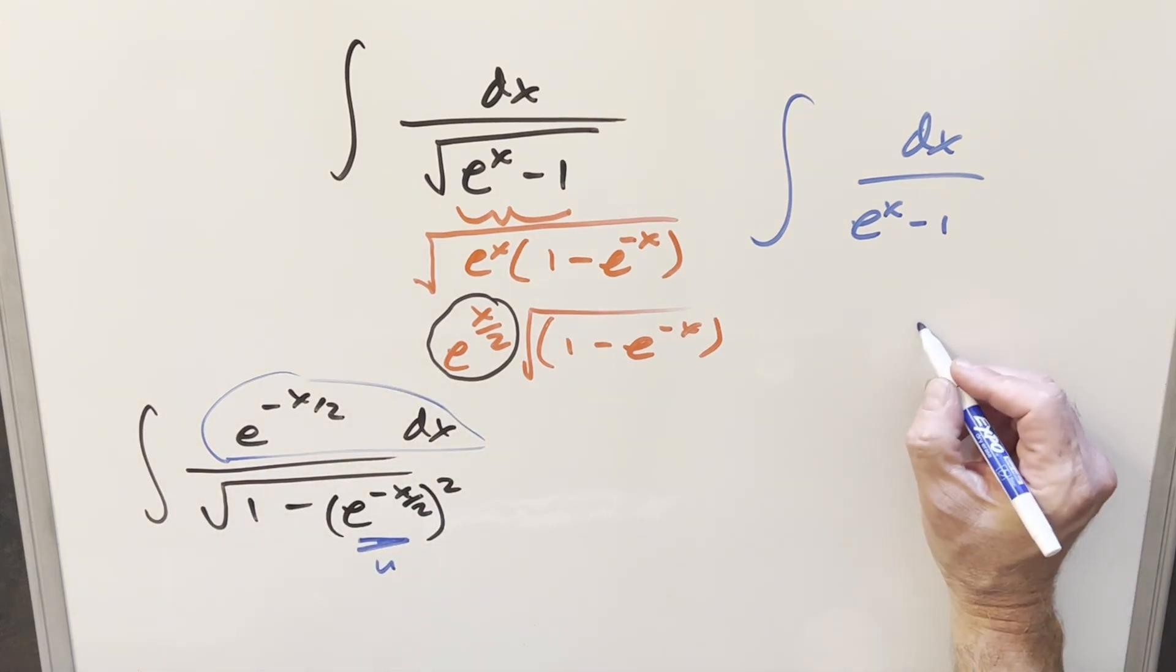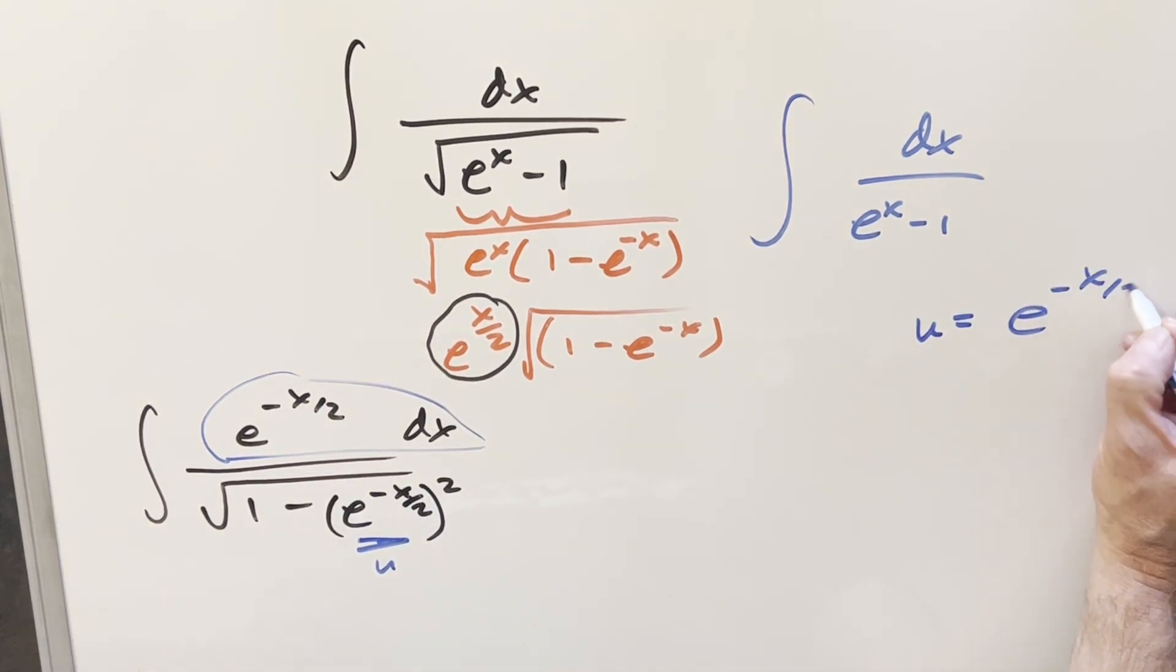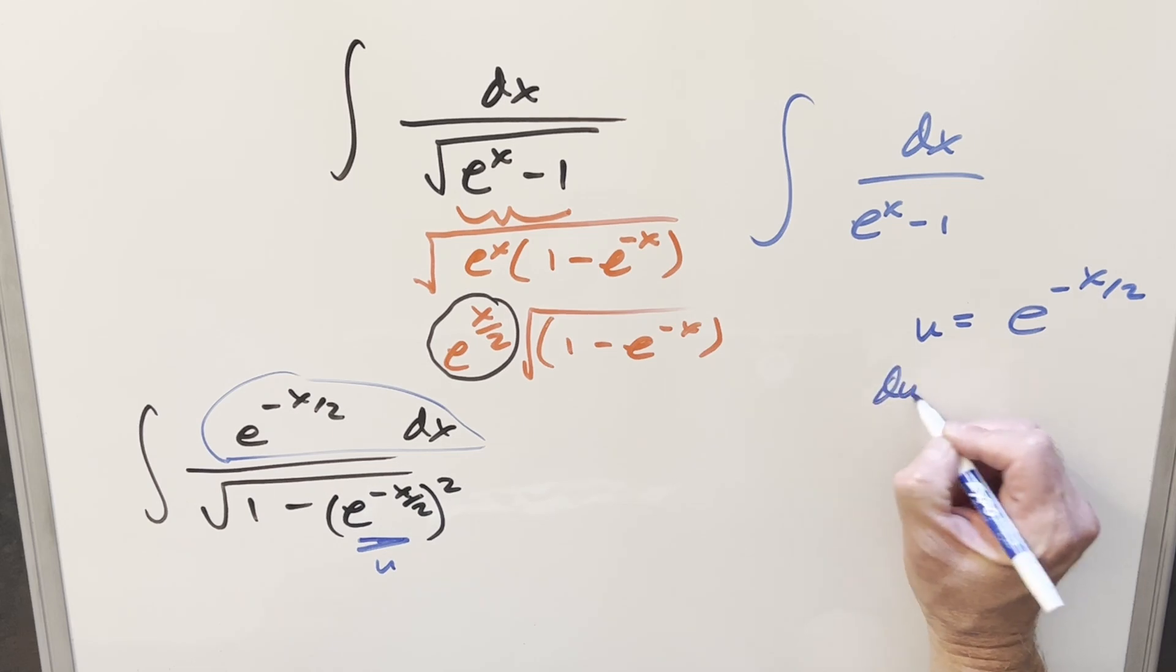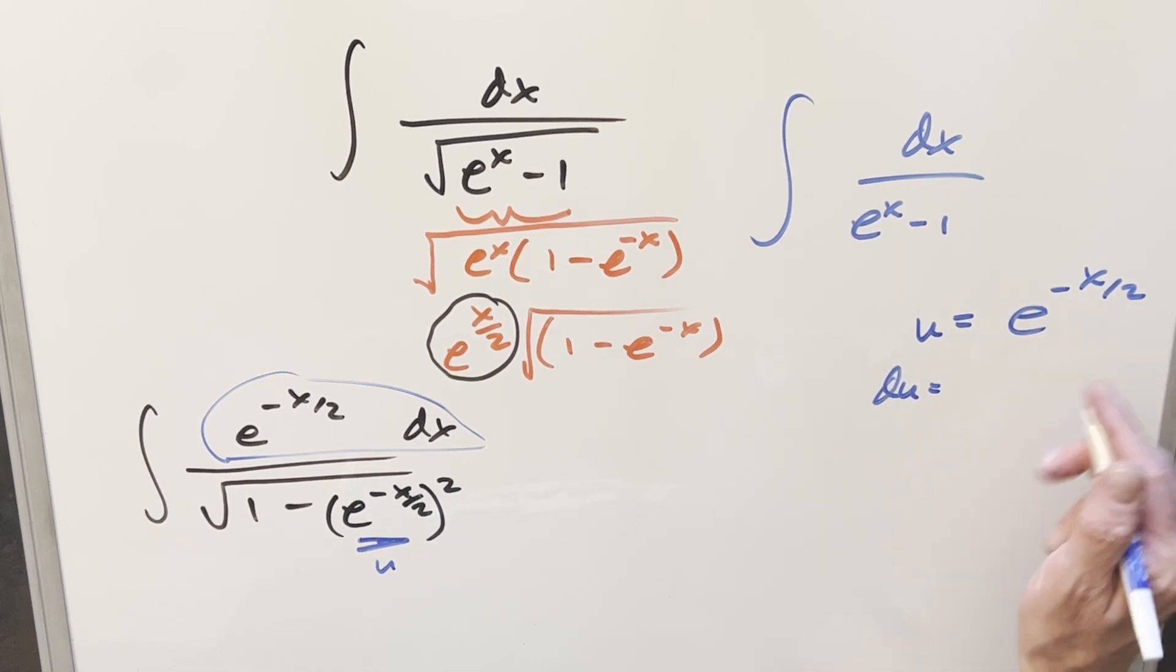So setting this up, u is just going to be e to the minus x over 2. Take the derivative, so du, minus a half is going to come out here. So we'll have minus one-half e to the minus x over 2 dx.